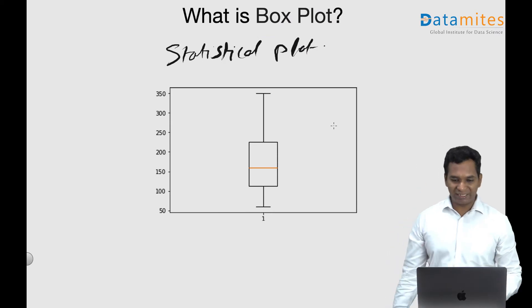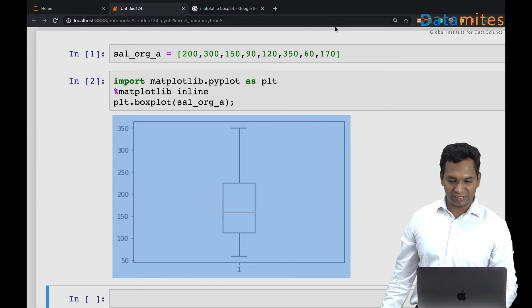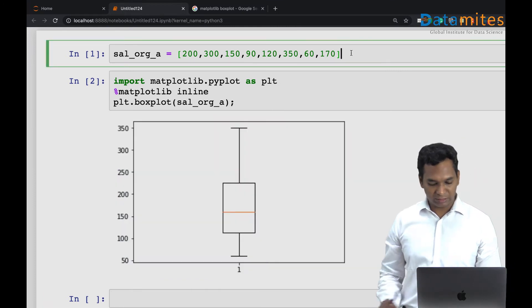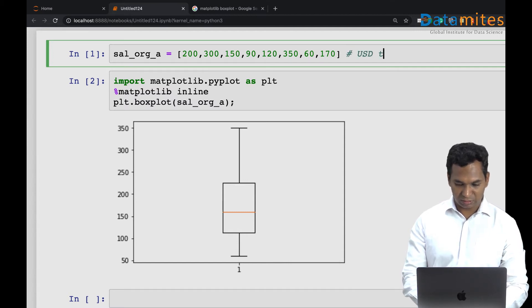This is the box plot of the data which is the employee salaries of an organization, which is in, let's say, USD thousands per annum.